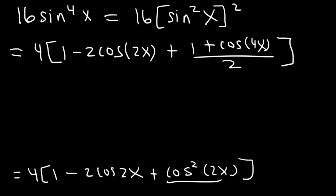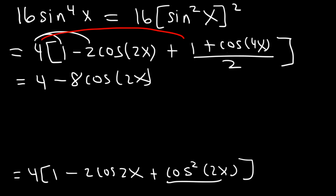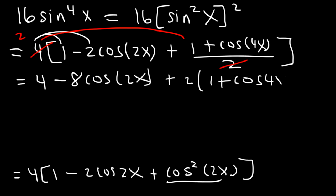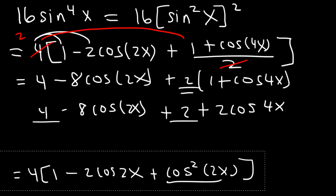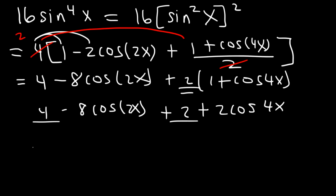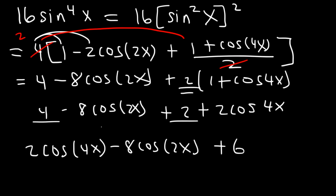Now let's distribute the 4. That gives 4 minus 8 cosine 2x. Multiplying 4 by the fraction (1 plus cosine 4x)/2 gives 2 times (1 plus cosine 4x), and distributing the 2 gives plus 2 plus 2 cosine 4x. Combining the constants 4 plus 2 gives 6. So the final answer is 6 minus 8 cosine 2x plus 2 cosine 4x.